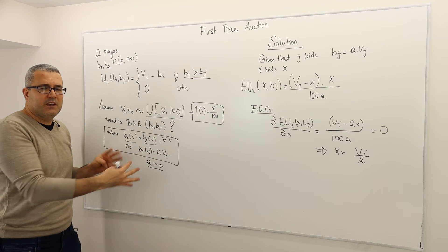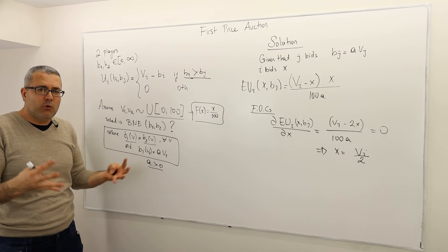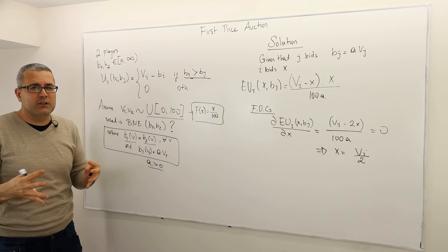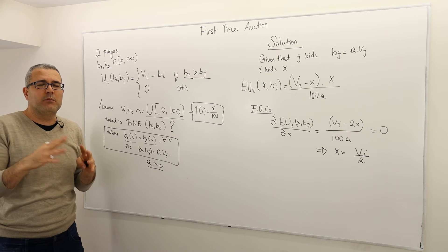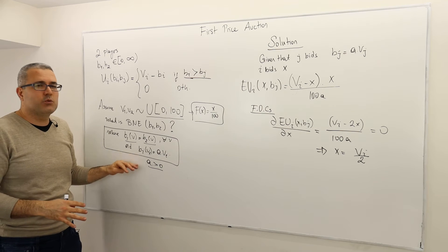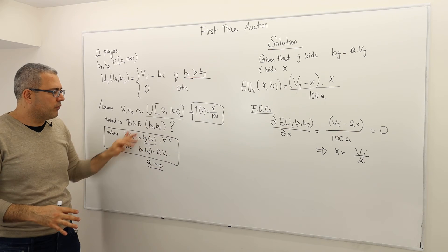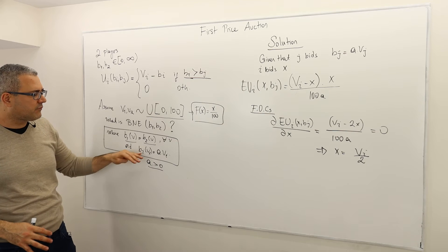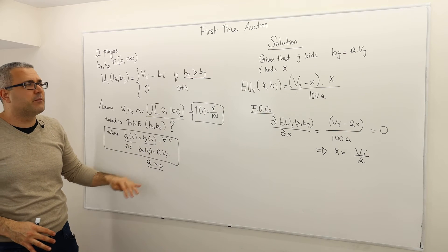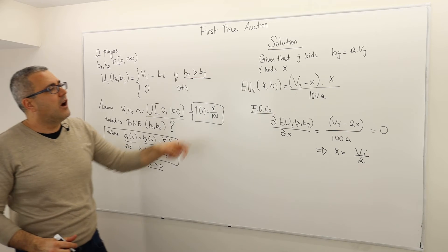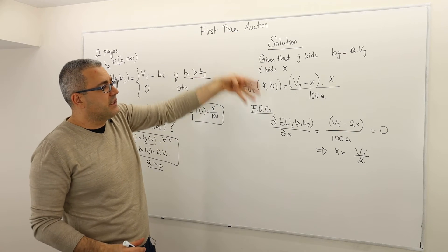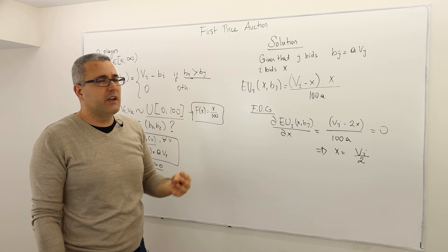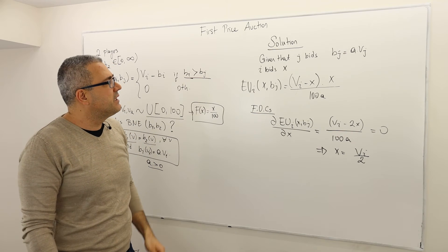Focusing on symmetric linear bids narrows our focus and makes the solution easier. This is why we narrow the focus onto symmetric and linear bids. The solution is just a few lines, but I'm going to explain it in detail.